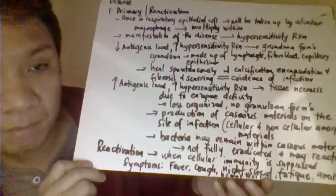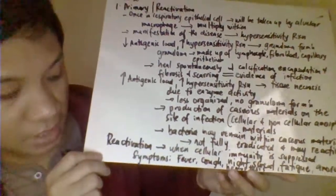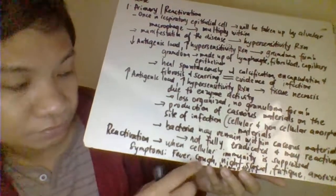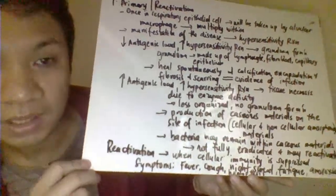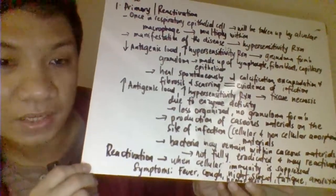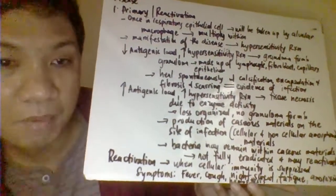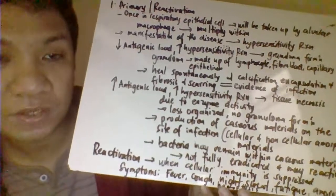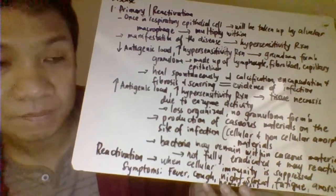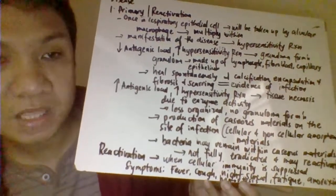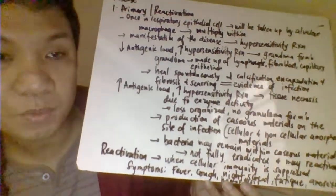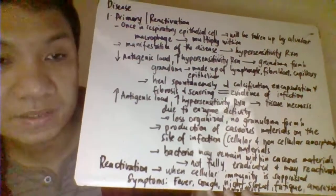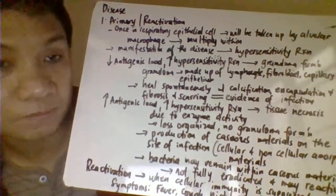Clinical manifestations include fever, cough, night sweats, weight loss, anorexia, and hemoptysis when the infection becomes severe — meaning there is blood present in the sputum, indicating a severe manifestation of the infection.